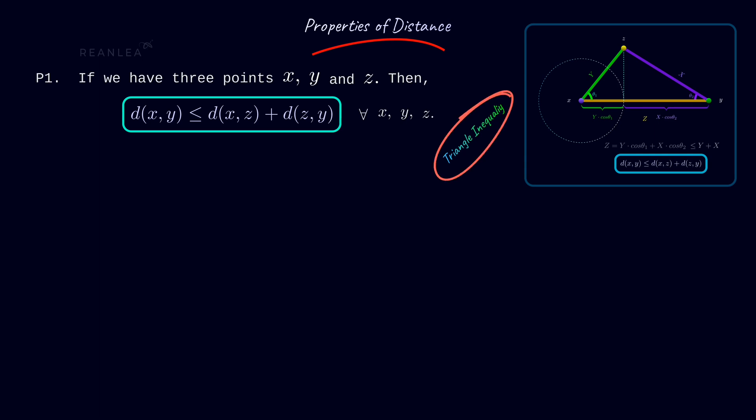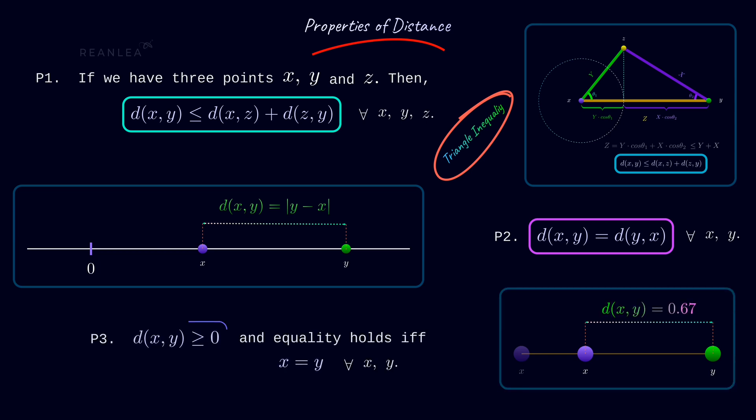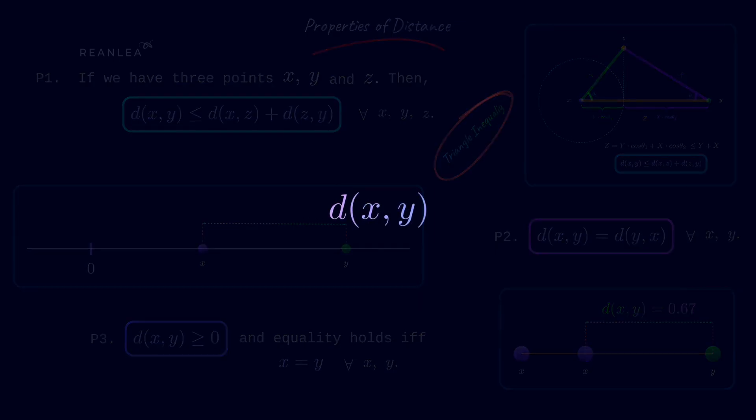Some other properties of distance are symmetry, which states that d of xy is equal to d of yx for all x and y, and non-negativity, which is d of xy is greater than or equal to 0 for all x and y. So here, d of xy gives us the distance between two points x and y.